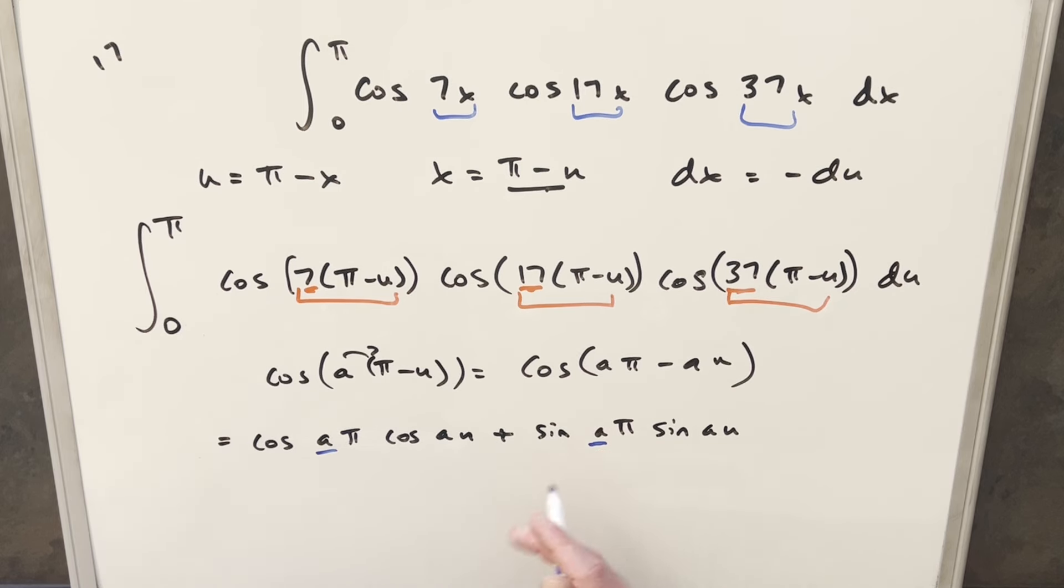So this whole piece of it goes away, but it's going to matter right here more on this term because when a is odd here, cosine of pi is minus one, cosine of three pi is minus one. Any of these values, this piece right here is going to be minus one. And so for our value of this whole expression, it's always going to be minus cosine a u.